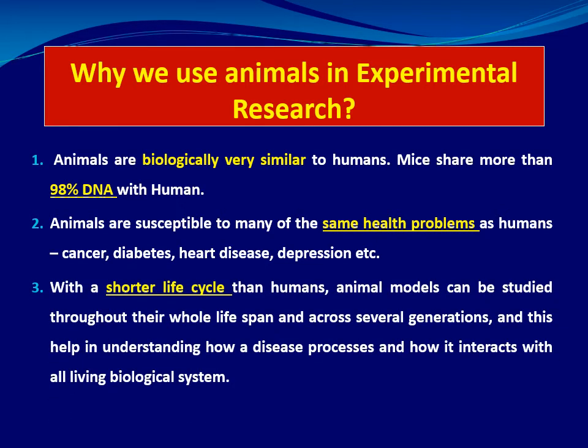Rats and mice have a shorter life cycle than humans, which is very important. The life cycle of rats is about two to three years, which equals 60 to 90 years in humans. So two weeks of treatment in rats equals approximately one year in humans. We can study disease throughout the whole life cycle and across several generations to understand disease and study the effect of drugs across all ages.